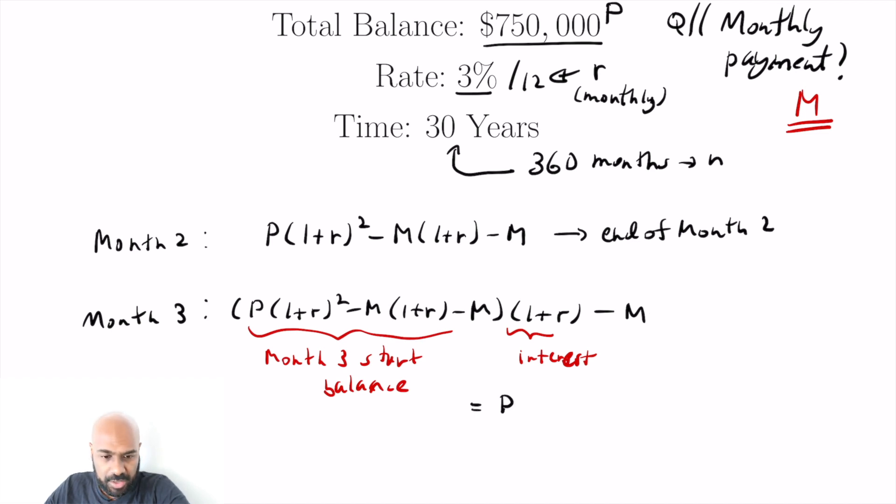multiplying by that interest, subtract off the monthly payment that we have. And then I'm hoping we have a pattern here. So we get P times one plus R cubed. Cool. Then we have a minus one plus R squared times M, then a minus M times one plus R, then a minus M. Okay.